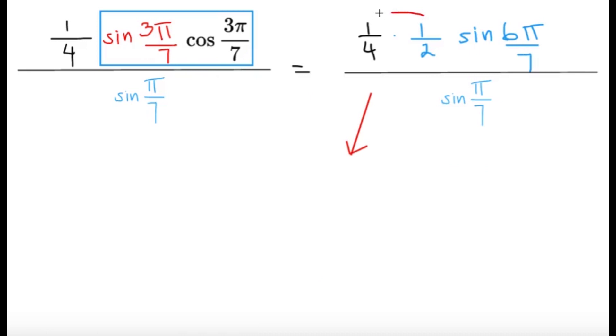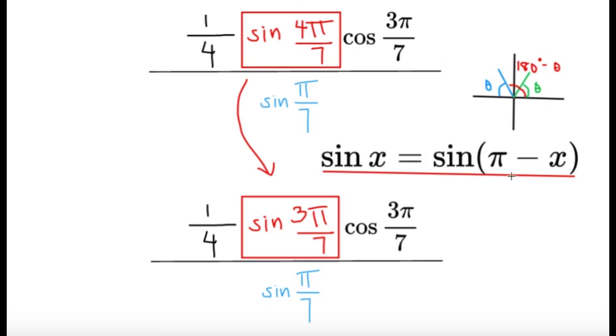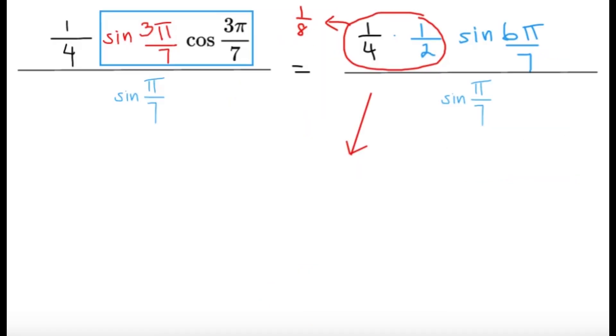Now, first of all, the one fourth times one half, that gives us one eighth. And then we know the answer is one eighth, because I told you guys that beforehand. But what can we do with this sine six pi over seven and sine pi over seven, actually, the same identity we have over here, the sine x equals sine pi minus x. Because if you realize, pi over seven and six pi over seven, they're supplementary, they add up to pi. So in fact, these two are the same. So I can just directly cancel them together, cancel them out like that.